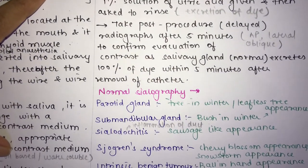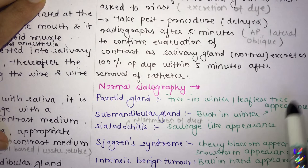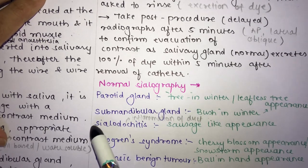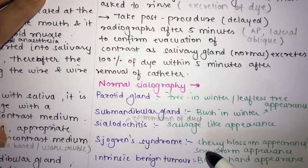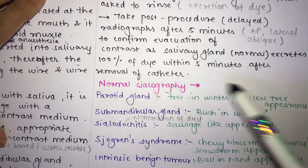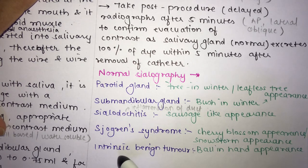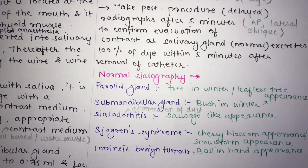In normal sialography, the parotid gland shows a 'tree in winter' or leafless tree appearance, while the submandibular gland shows a 'bush in winter' appearance. Sialoductitis (inflammation of the duct) produces a sausage-like appearance. Sjögren's syndrome shows a cherry blossom or snowstorm appearance, and an intrinsic benign tumor shows a 'ball in hand' appearance. These appearances are important for MCQs and viva examinations.